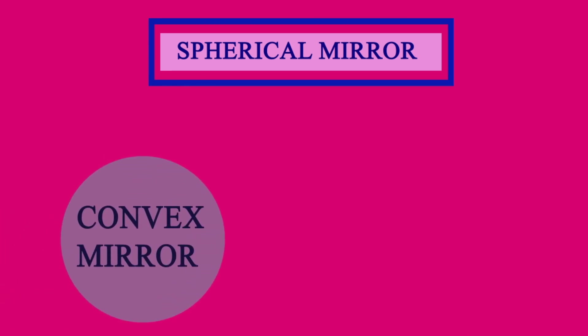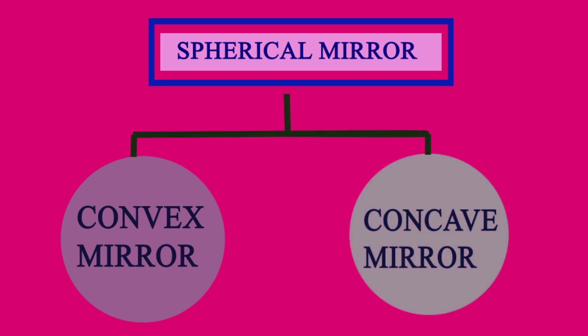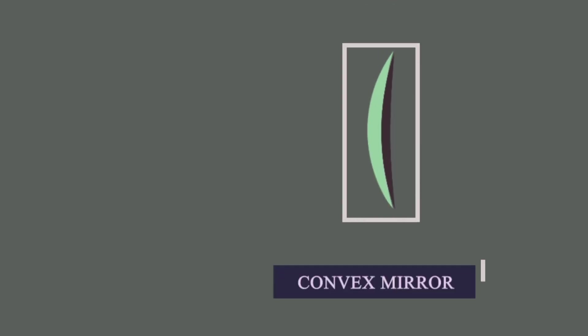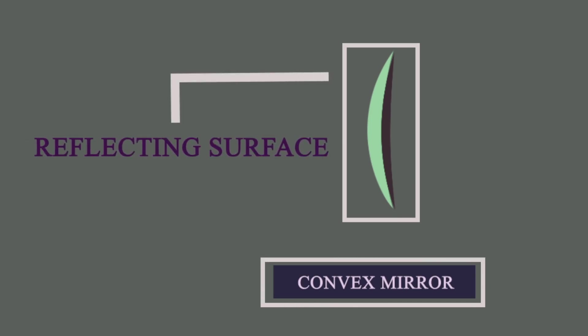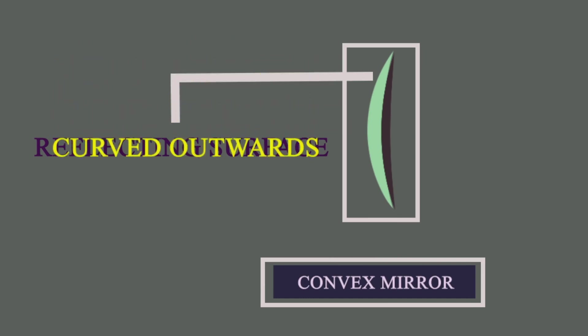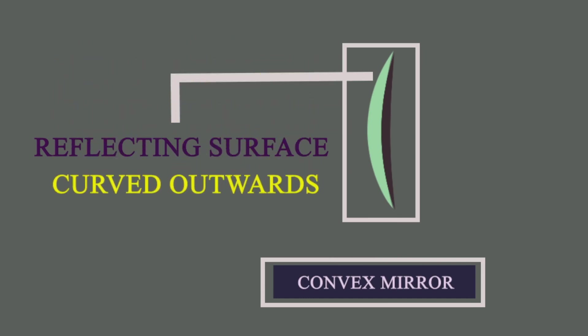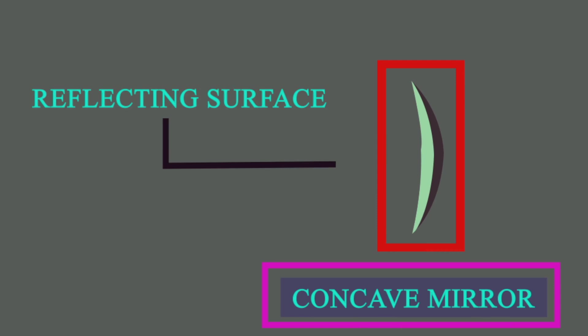Spherical mirrors are of two types: one is a convex mirror, which is curved outwards, and another one is a concave mirror, which is curved inwards. In a convex mirror, the reflecting surface is curved outwards, and in a concave mirror, the reflecting surface is curved inwards.